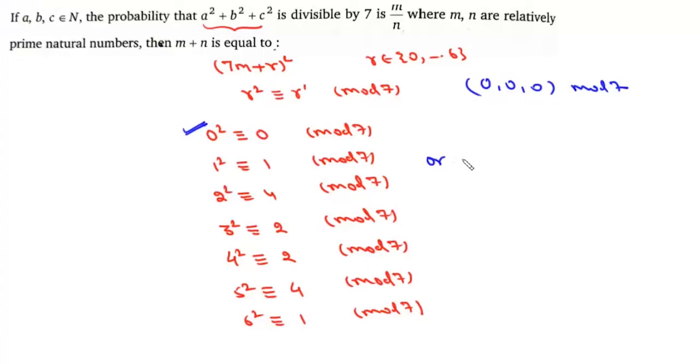Or when it is 1, 2, and 4. In that case it will be 1 + 2 + 4 = 7, which again is 0 modulo 7.